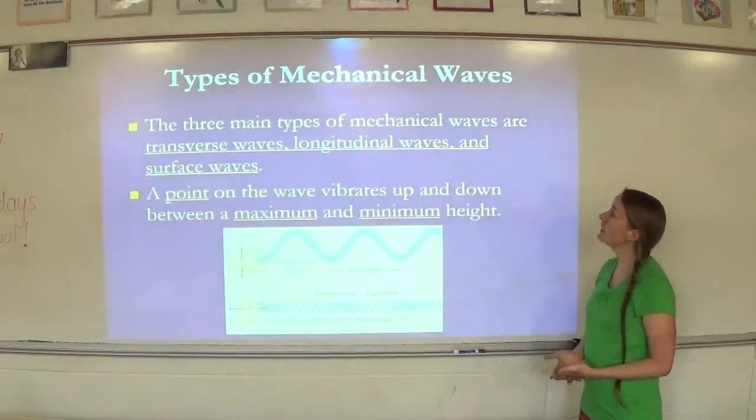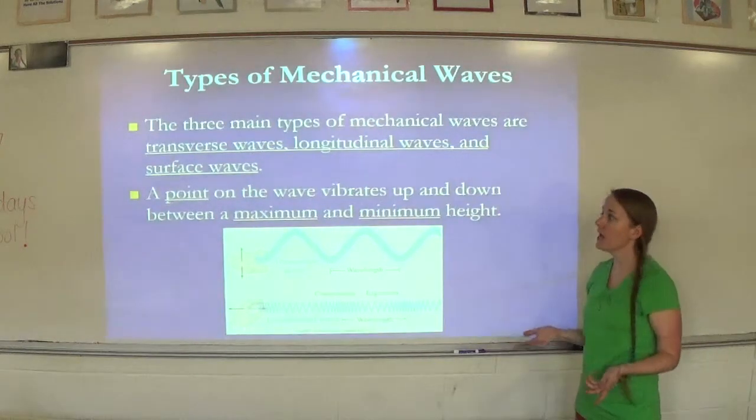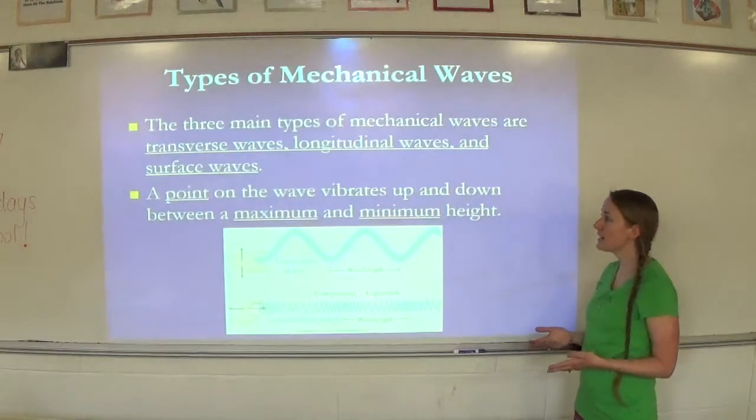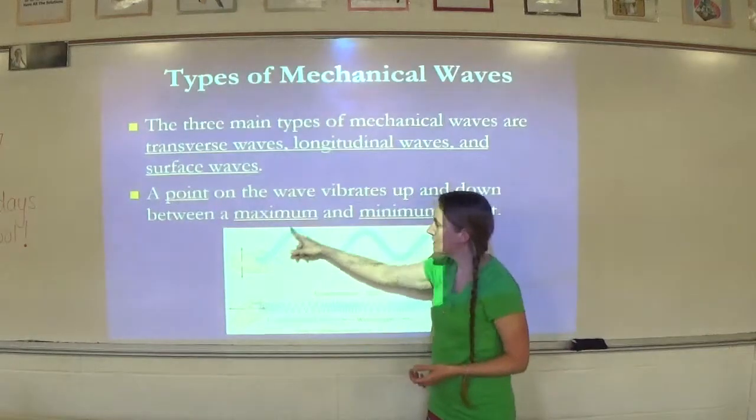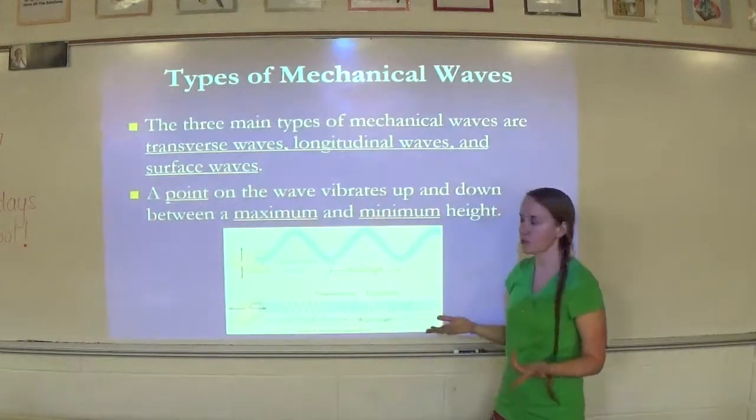So the three main types of mechanical waves are transverse waves, longitudinal waves, and surface waves. A point on the wave vibrates up and down between a maximum and minimum height. So this is like a slinky. So here is a transverse wave. We have a maximum and a minimum height of our transverse wave.